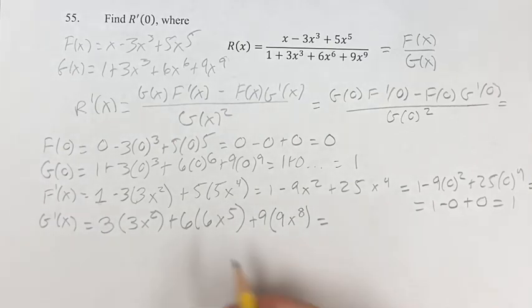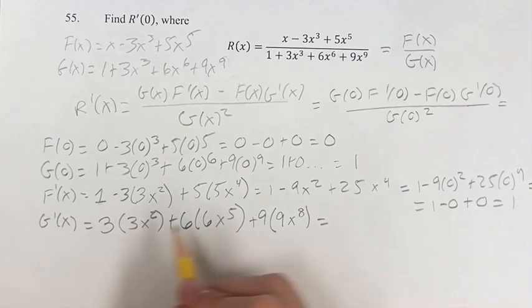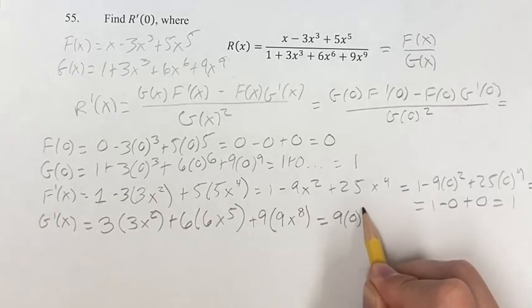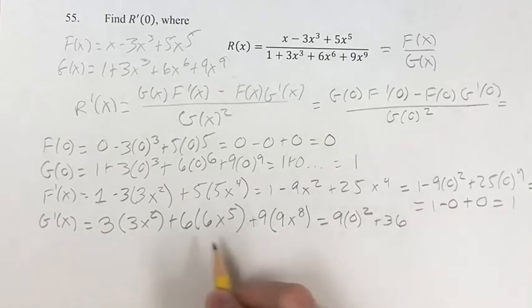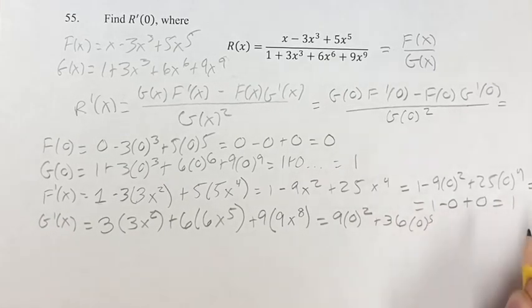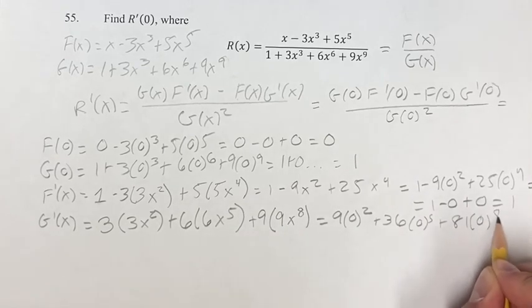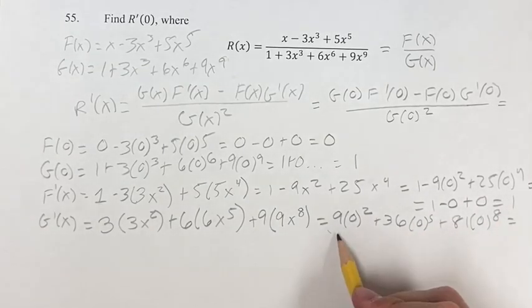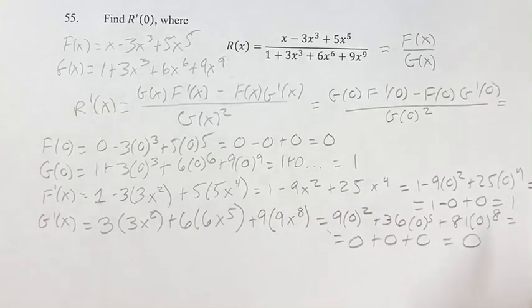And this is, for x is equal to 0, we have 3 times 3 is 9 times 0 squared, plus 6 times 6 is 36 times 0 to the 5th, plus 9 times 9 is 81 times 0 to the 8th. And this is 0 plus 0 plus 0, so we're multiplying by 0, they all cancel out, 0 plus 0 plus 0 is 0.